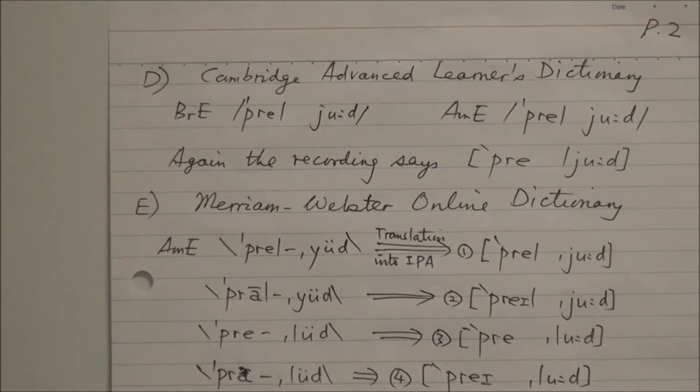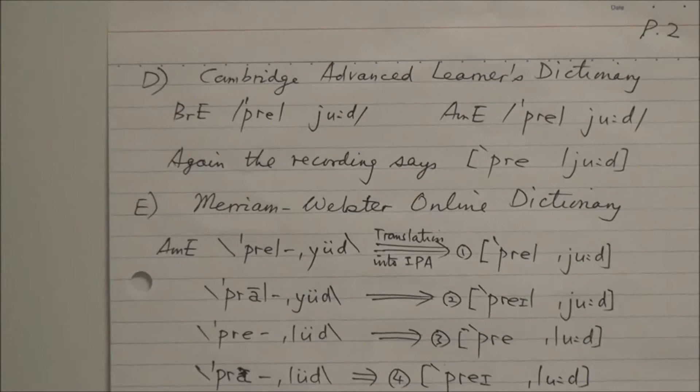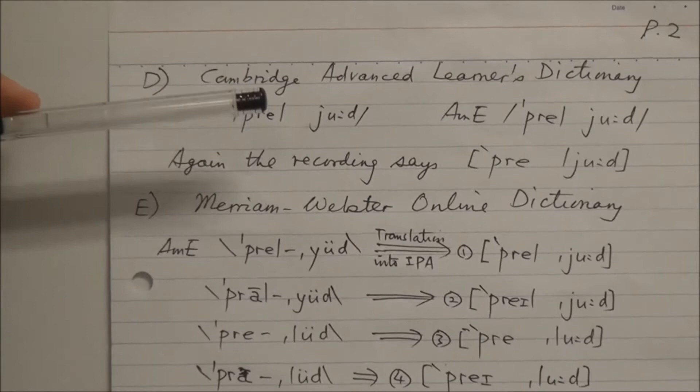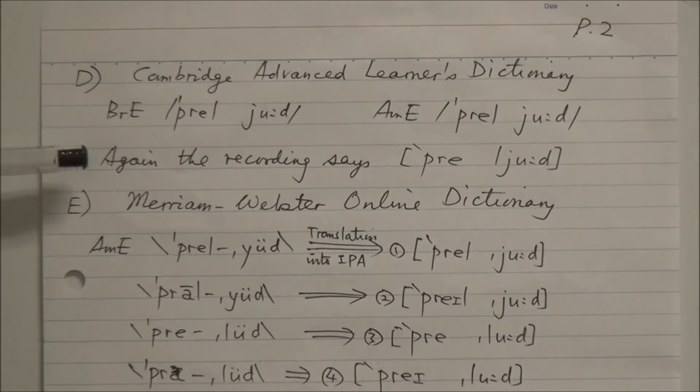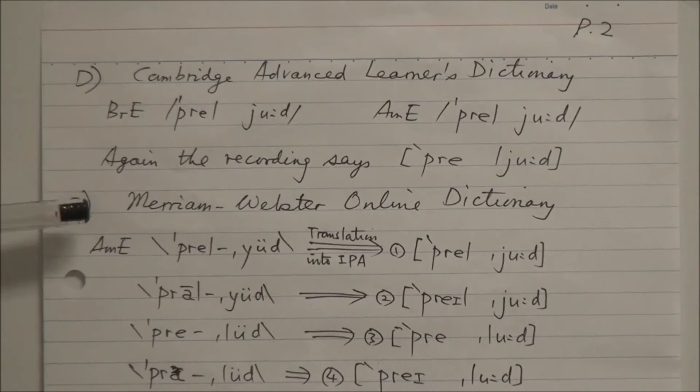Cambridge Advanced Learner's Dictionary gives one transcription for British English and one for American English. Again, the recording differs from both the British and the American versions.